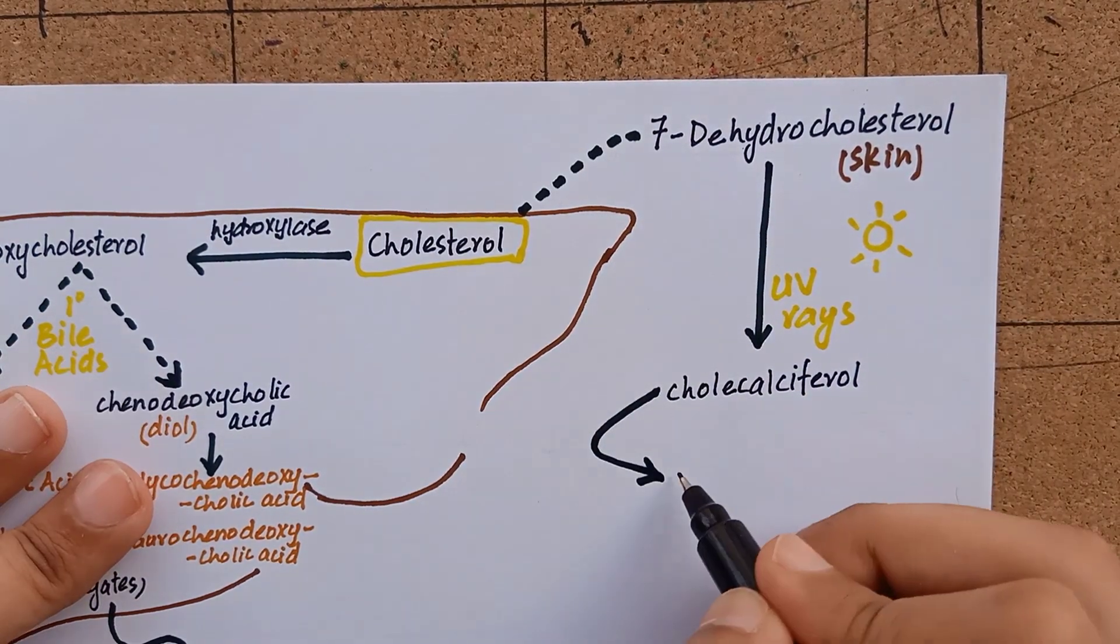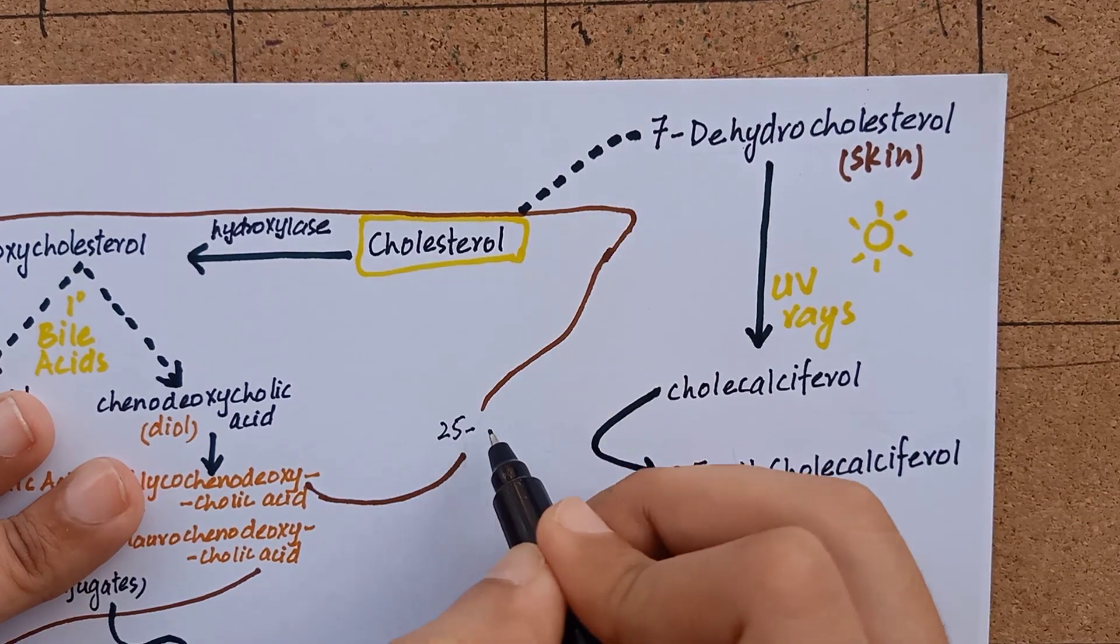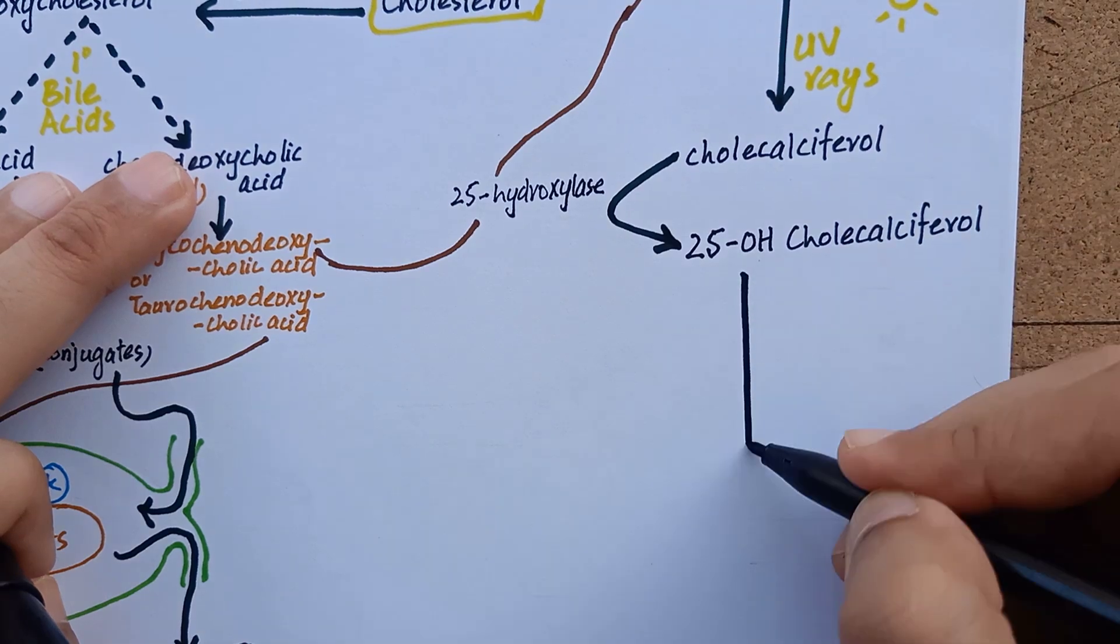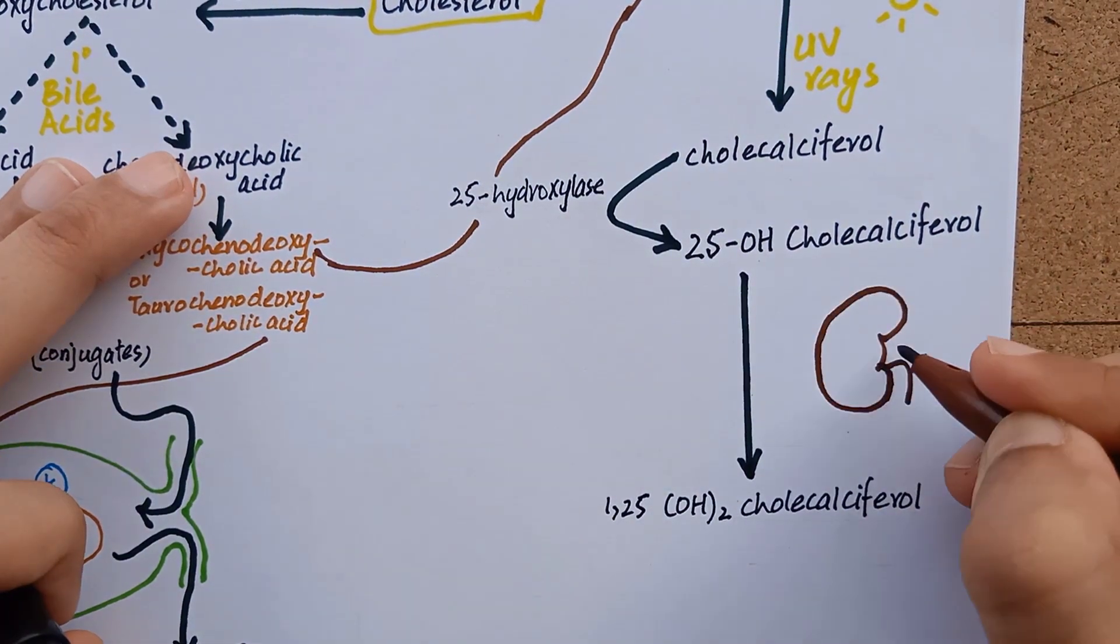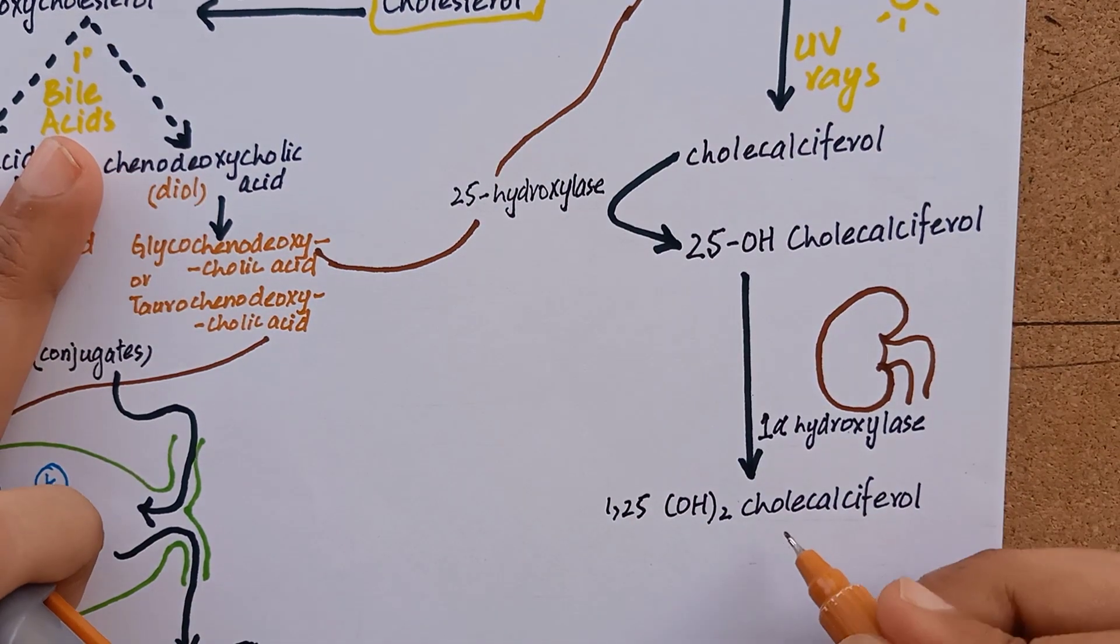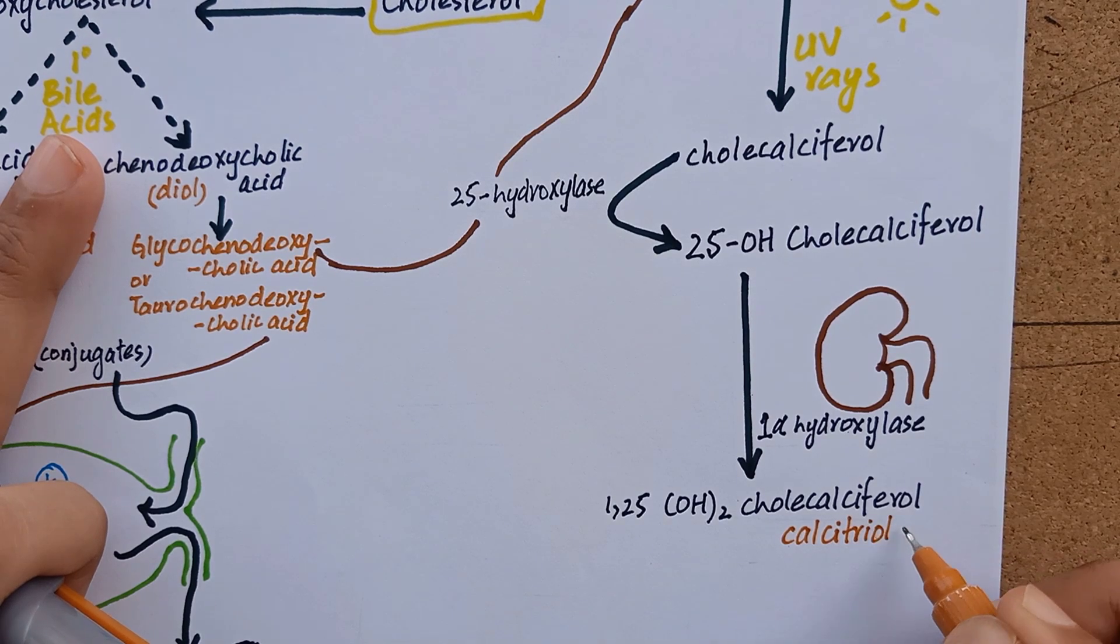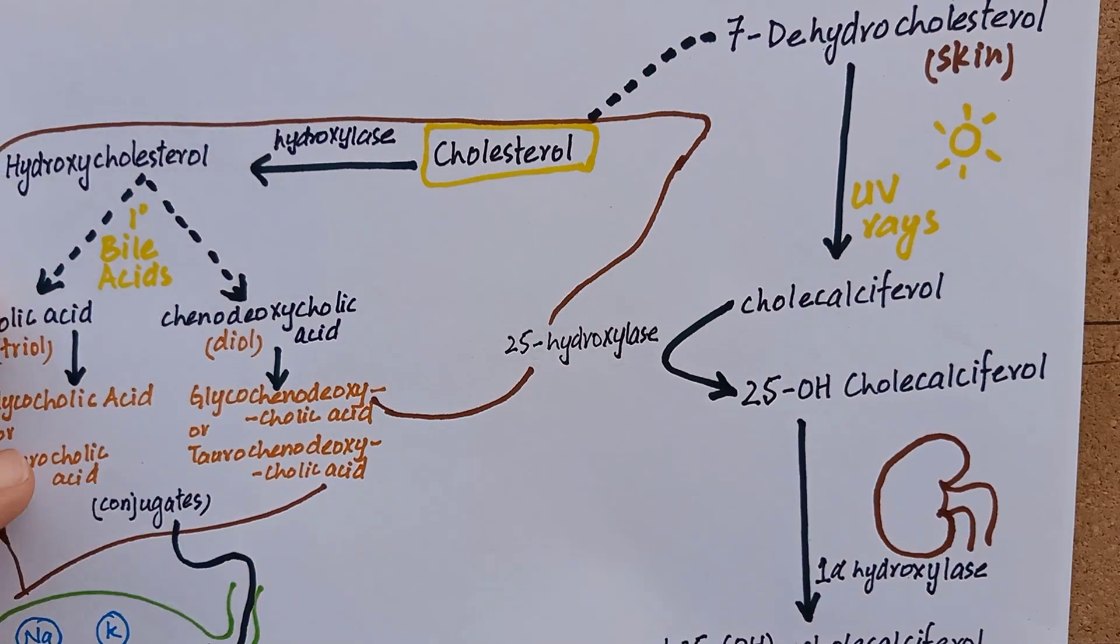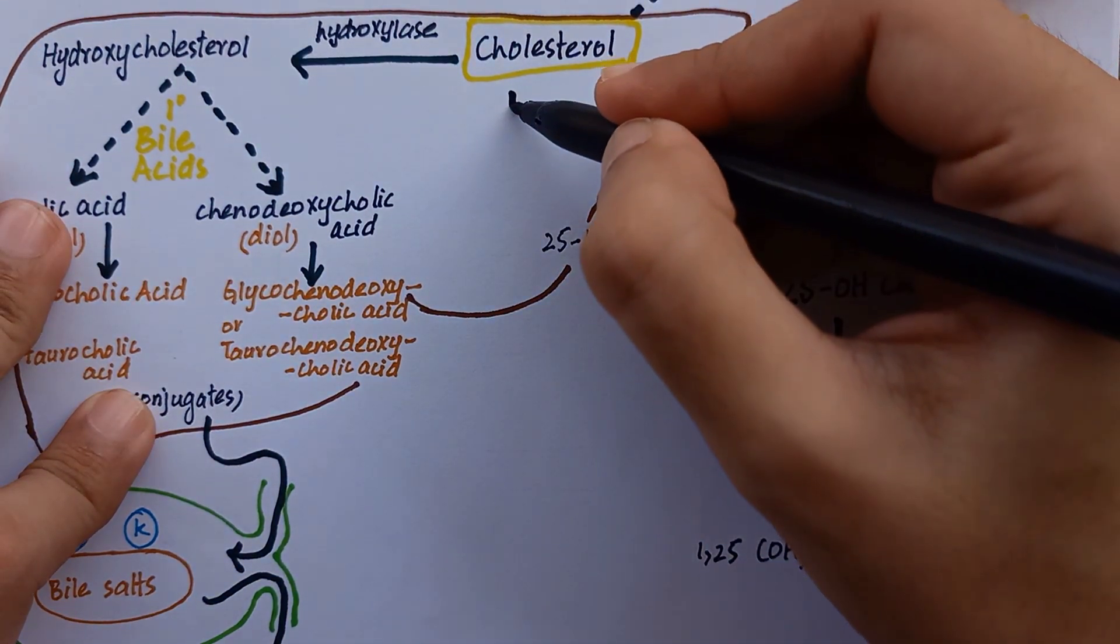Cholecalciferol is converted to 25-hydroxycholecalciferol by a liver enzyme known as 25-hydroxylase. This 25-hydroxycholecalciferol then becomes 1,25-dihydroxycholecalciferol with the help of a renal enzyme known as 1-alpha-hydroxylase. 1,25-dihydroxycholecalciferol is also known as calcitriol, which is the active form of vitamin D. So vitamin D is formed by an intermediate of cholesterol present in the skin known as 7-dehydrocholesterol.